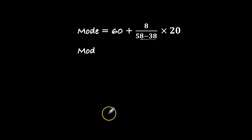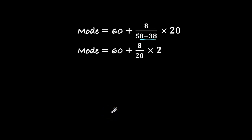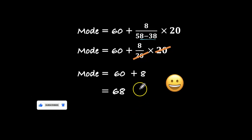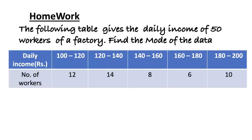Mode equals 60 plus (8 divided by 20) into 20. The 20s cancel, so Mode equals 60 plus 8 equals 68. I hope it's clear. Please try this question and write the answer in the comment box: the following table gives the daily income of 50 workers of a factory — find the mode of the data.